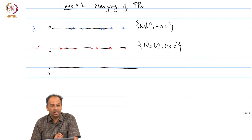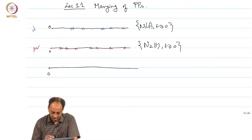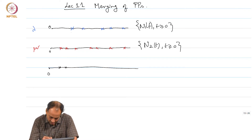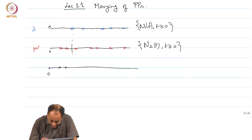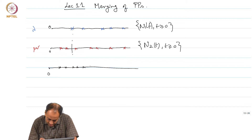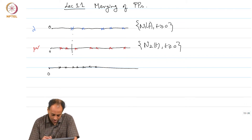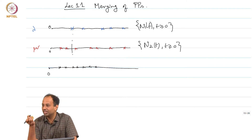Imagine I am color-blind — I cannot see any colors. So I will only see that there is some arrival. An arrival from the blue process will appear here, an arrival from the red process will appear here, and so on. In the merged process there is an arrival at a particular time if there is an arrival in either of the two processes.